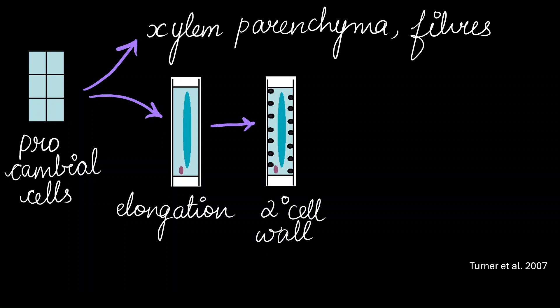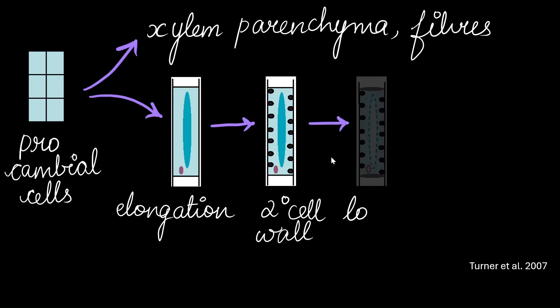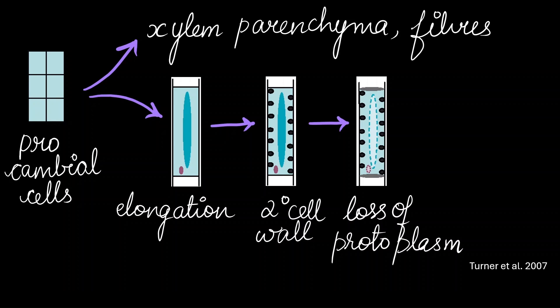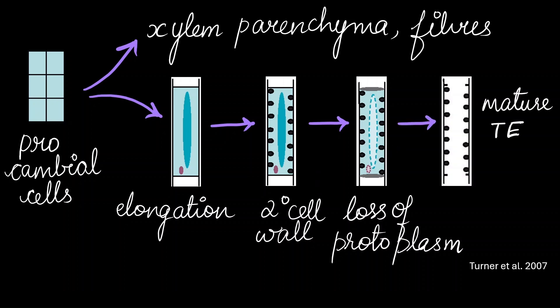These walls are very strong and elastic, and after that, they get rid of their protoplasm. There is an automated process where they undergo cell death, and all the living parts of the cell are lost. Finally, they give rise to the mature tracheary elements. This structure ensures that they are able to carry water to long distances, even under extreme tension.